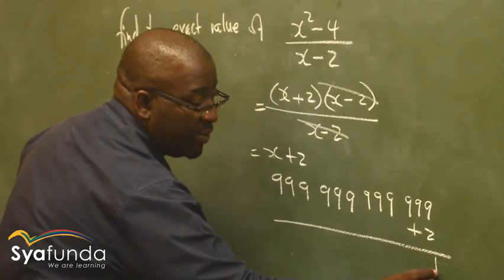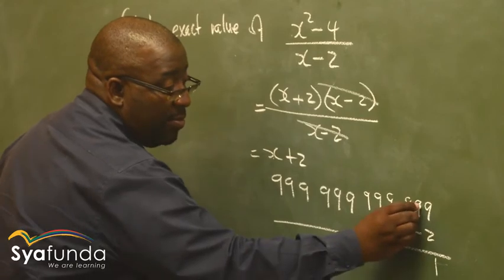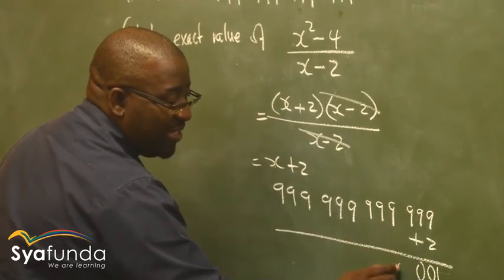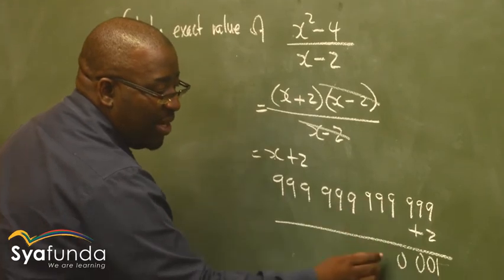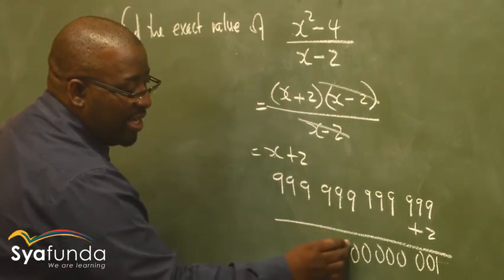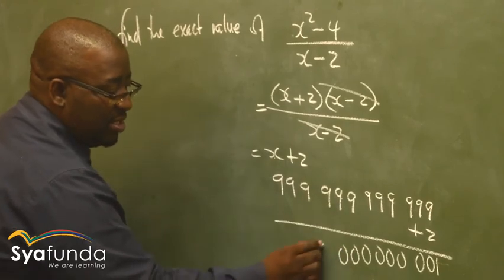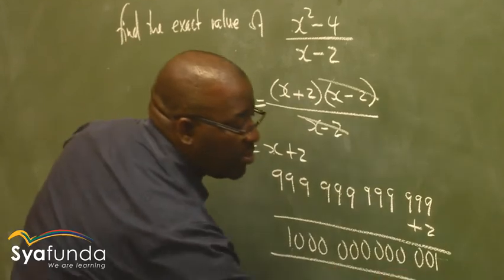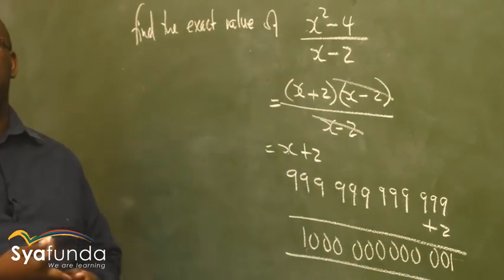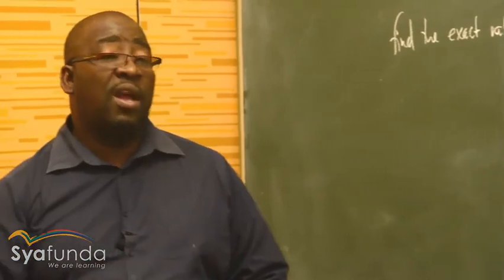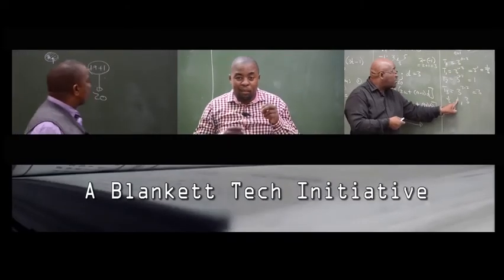Adding the repeating decimal 1.231231... plus 2, I get 3.231231... — carrying through each digit. This becomes our solution. These are typical problems that we call non-routine, that you can solve without using a calculator. Thank you.